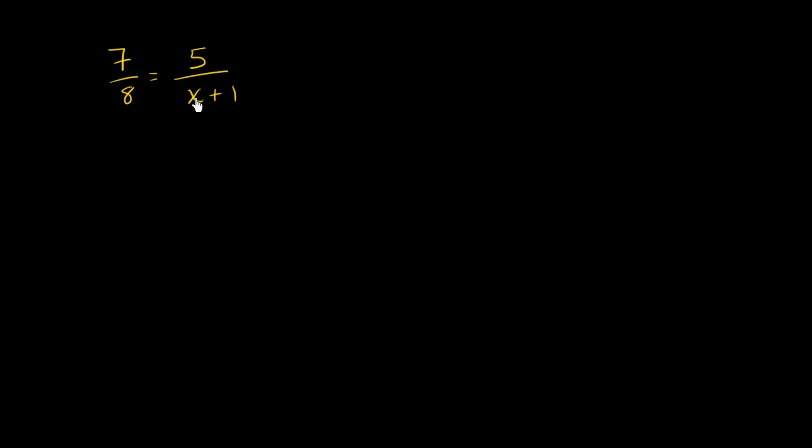And just to see where cross-multiplying comes from, that it's not some voodoo, that you still are doing logical algebra, you're doing the same thing to both sides of the equation. You just need to appreciate that we're just multiplying both sides by both denominators. So we have this 8 right over here on the left-hand side. If we want to get rid of this 8 in the denominator, we can multiply the left-hand side by 8. But in order for the equality to hold true, I can't do something to just one side. I have to do it to both sides.